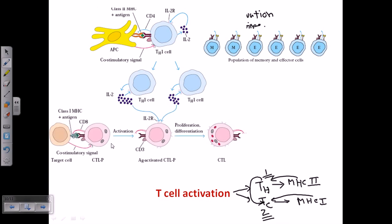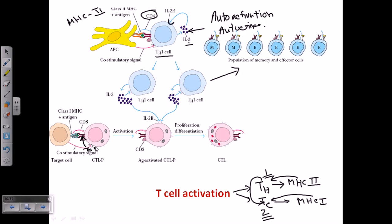Now let's talk about MHC class 1 interaction with cytotoxic T-cells. The cytotoxic T-cell attaches to the antigen presenting cell via MHC1-antigen interaction with its T-cell receptor (TCR), and also via co-stimulatory signals through CD8 and other co-stimulatory molecules. After this signal is recognized, the cytotoxic T-cell becomes activated and can kill the cell that activated it.